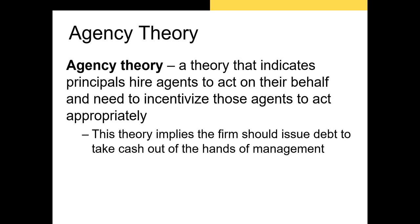The next theory we have related to capital structure is agency theory. Agency theory is very broad and it's used in a number of fields to explain human behavior. Agency theory involves a principal that owns some asset and an agent whom the principal hires to act on their behalf. The classic example in finance is the agency relationship between shareholders and board members. Shareholders own the firm but they often don't have time to oversee management themselves, so they appoint a board to oversee the firm and the management on their behalf.